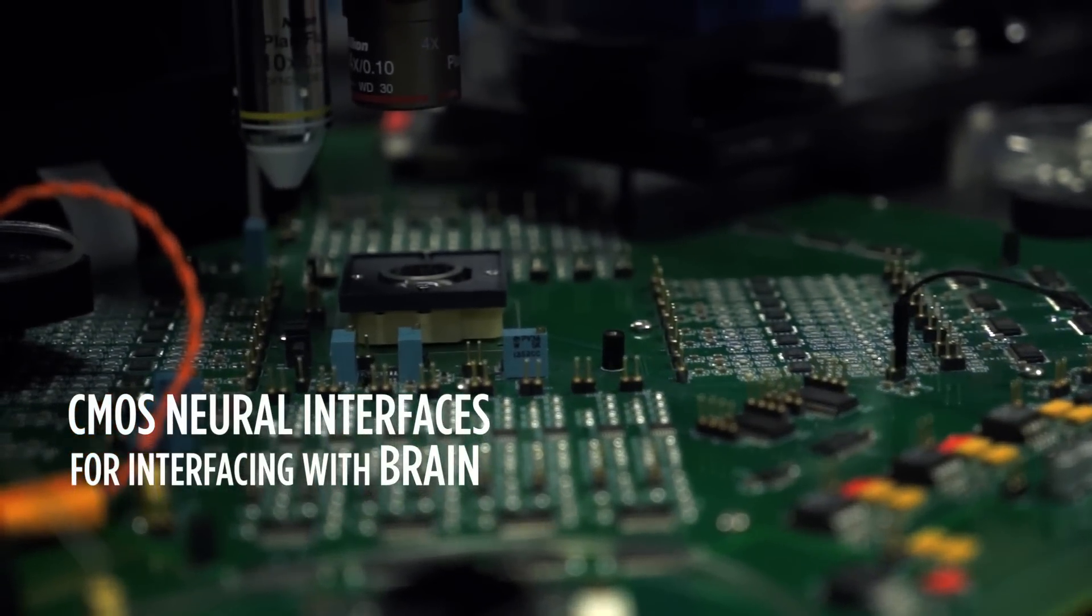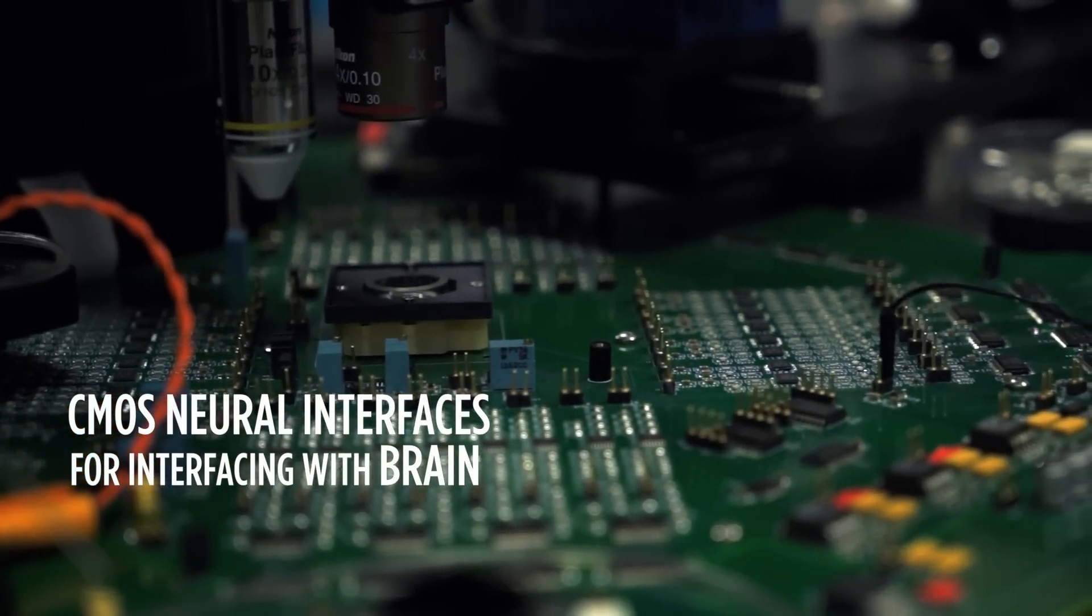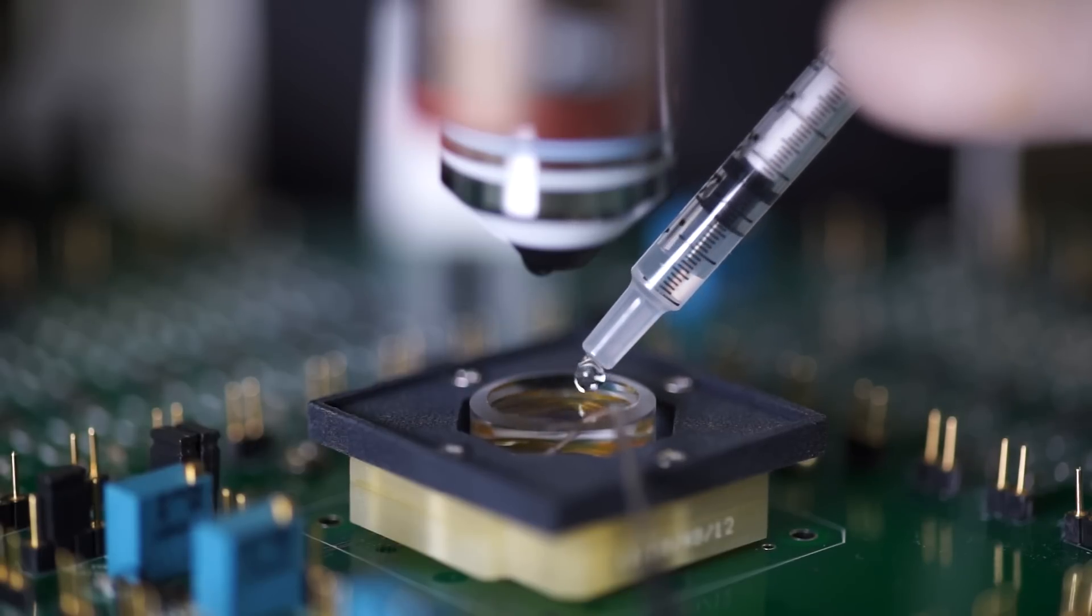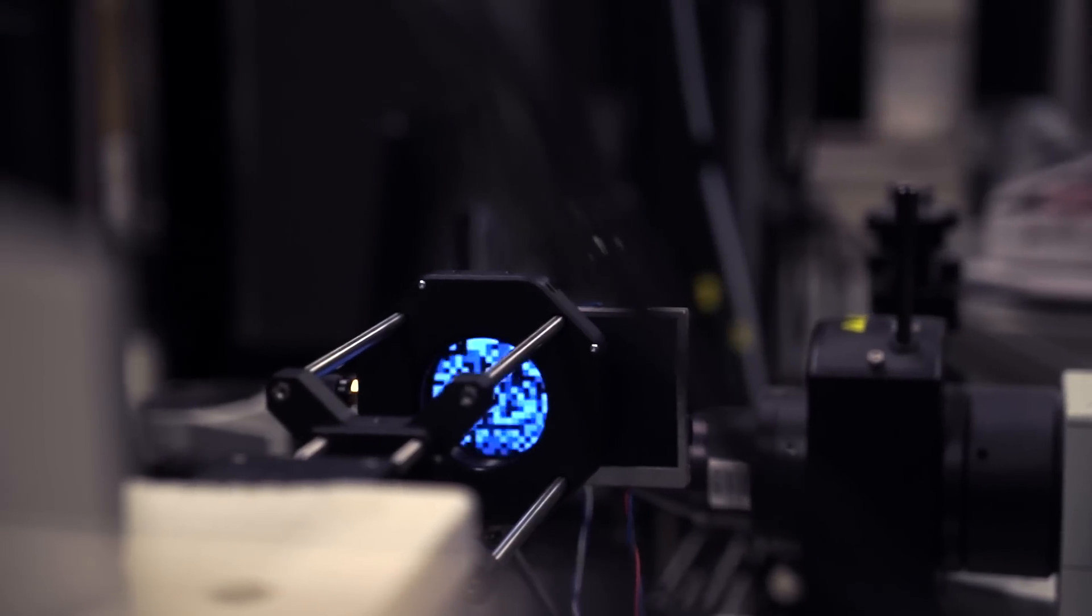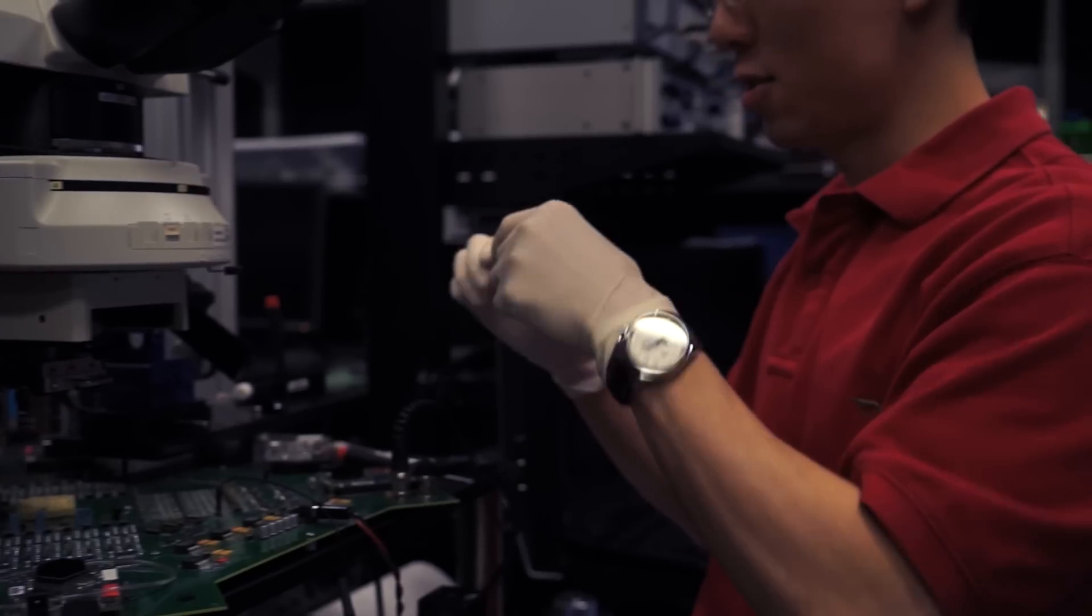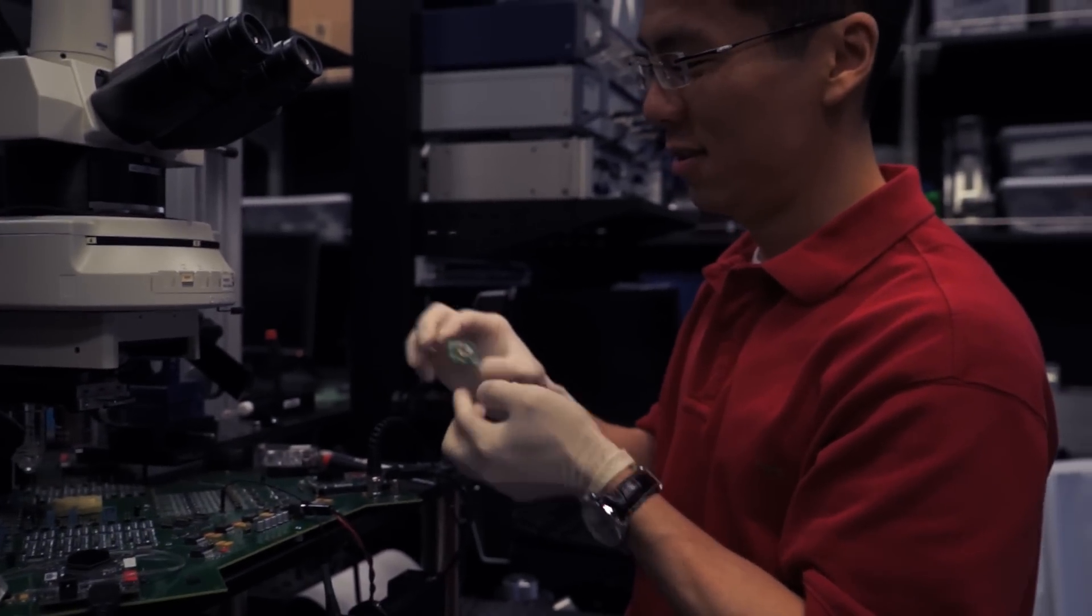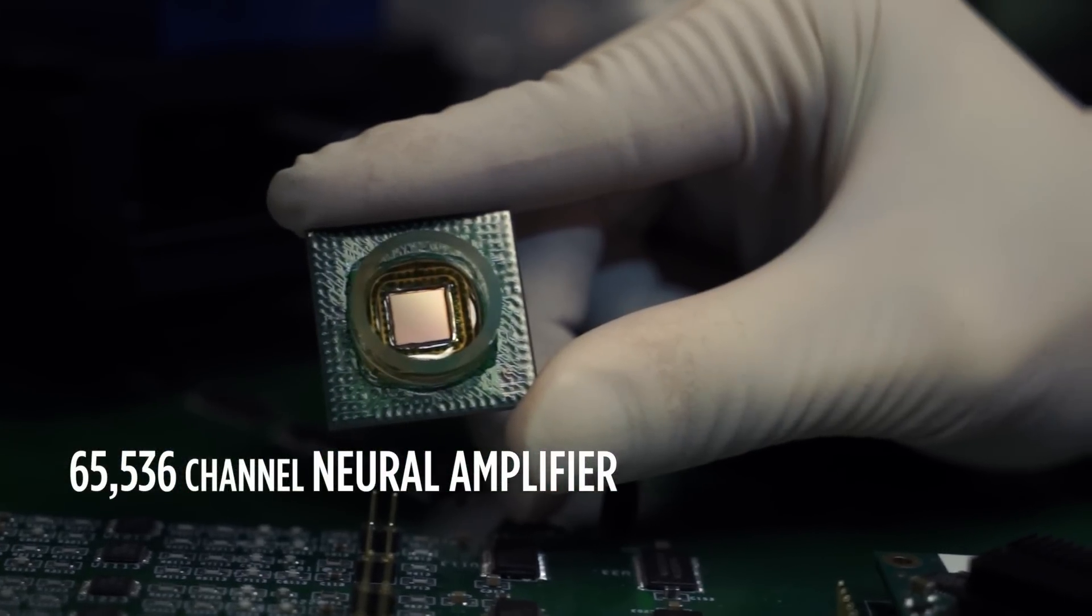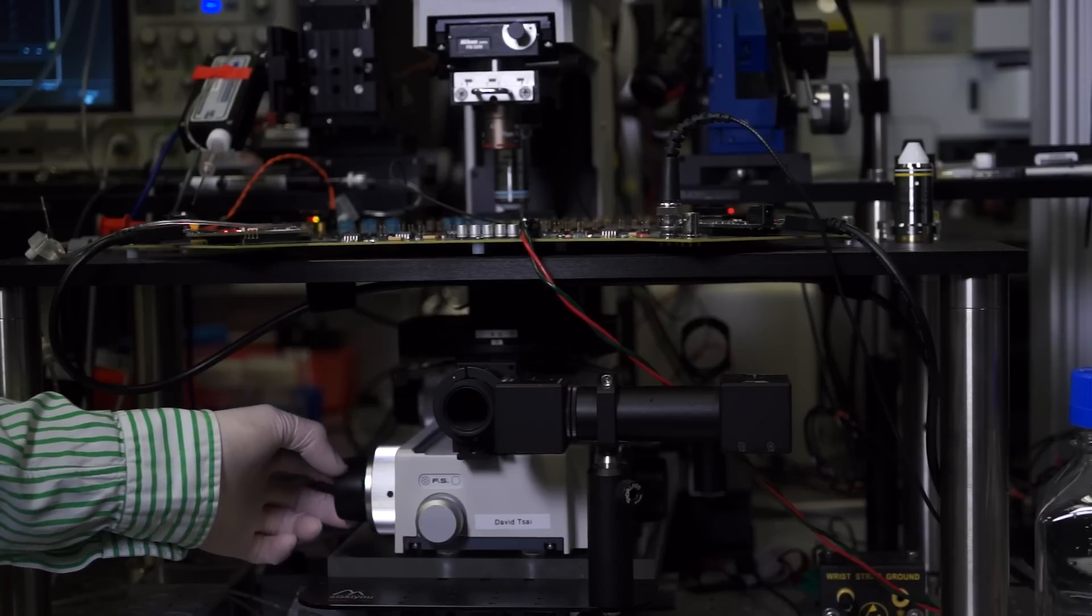This is actually set up for studying the retina. So he's putting a mouse retina directly onto that chip, and this allows him to project an image down onto the retina. Then he's imaging the ganglion cells. We can actually study very densely at the level of individual neurons, but over the entire expanse of the retina because we have such a large number of electrodes.